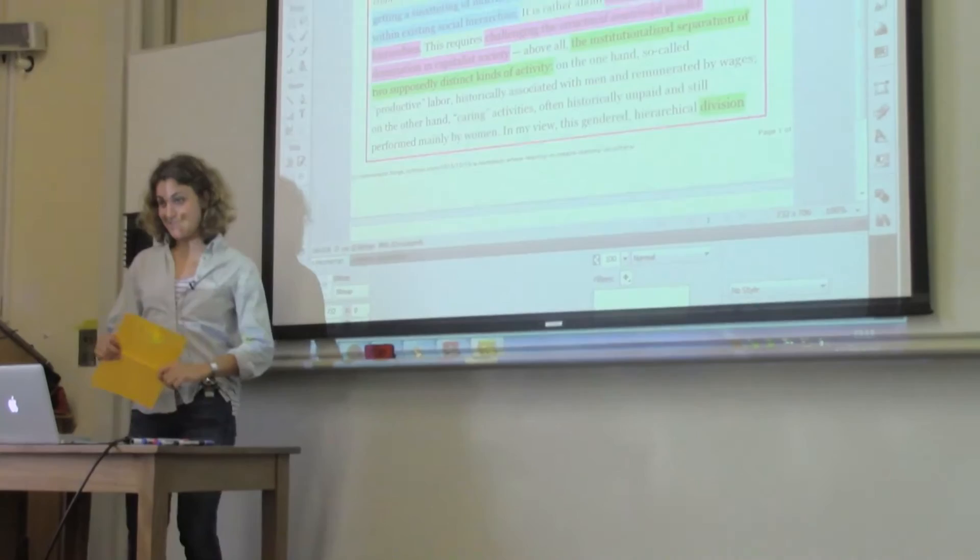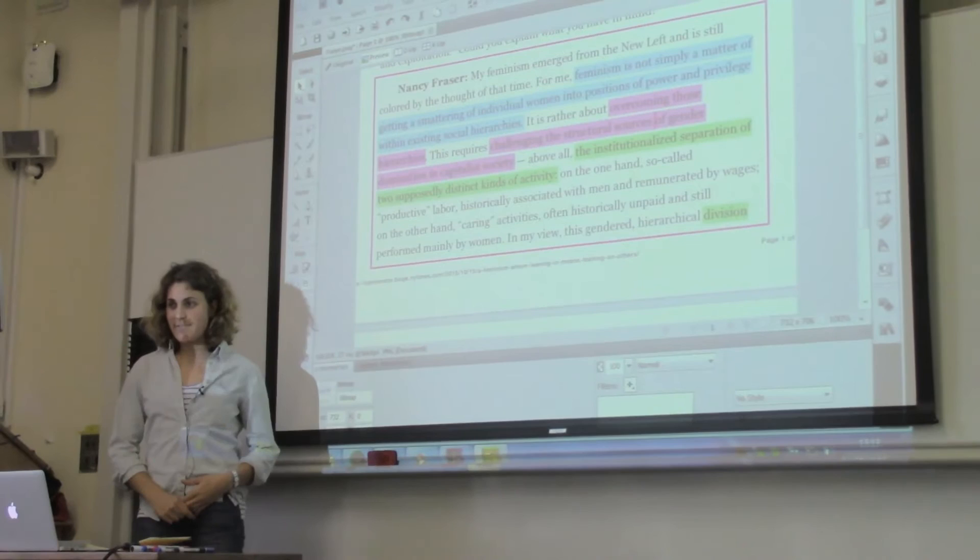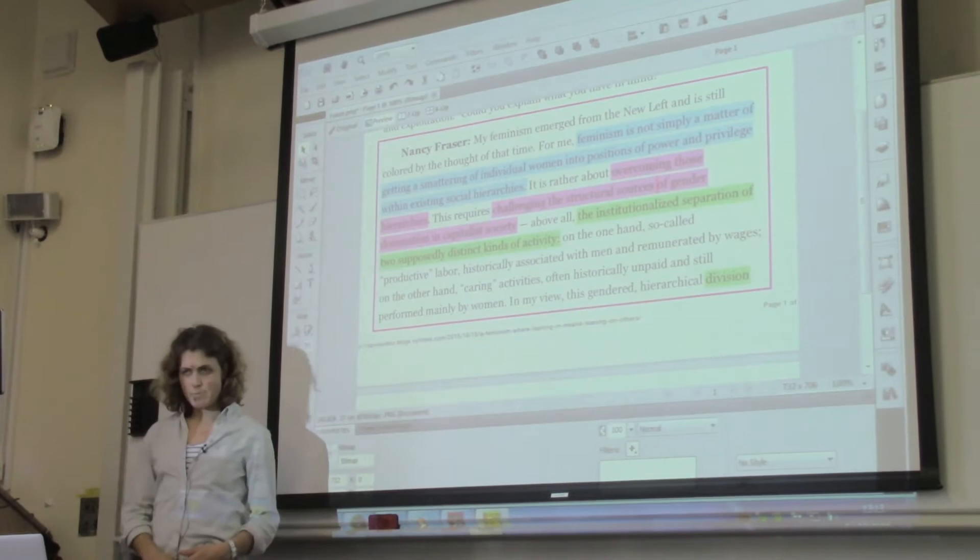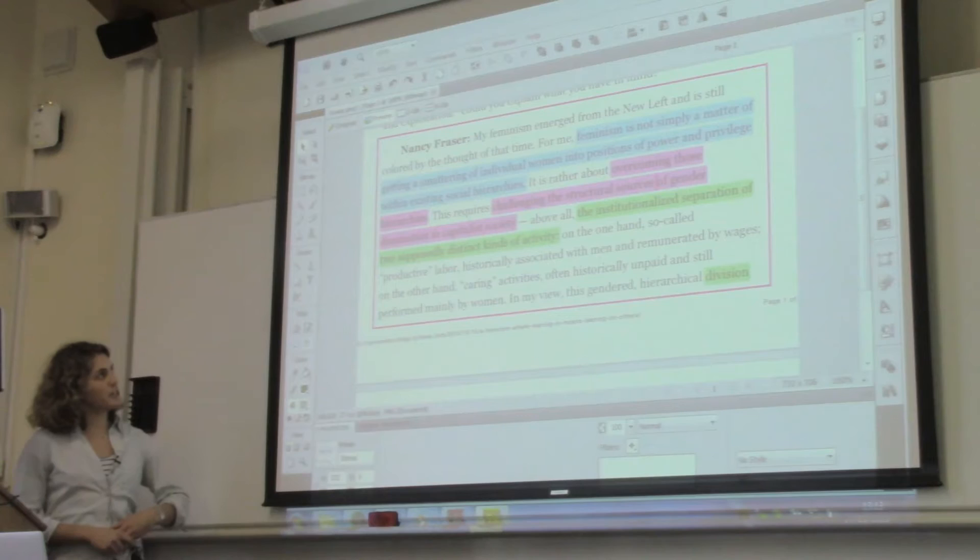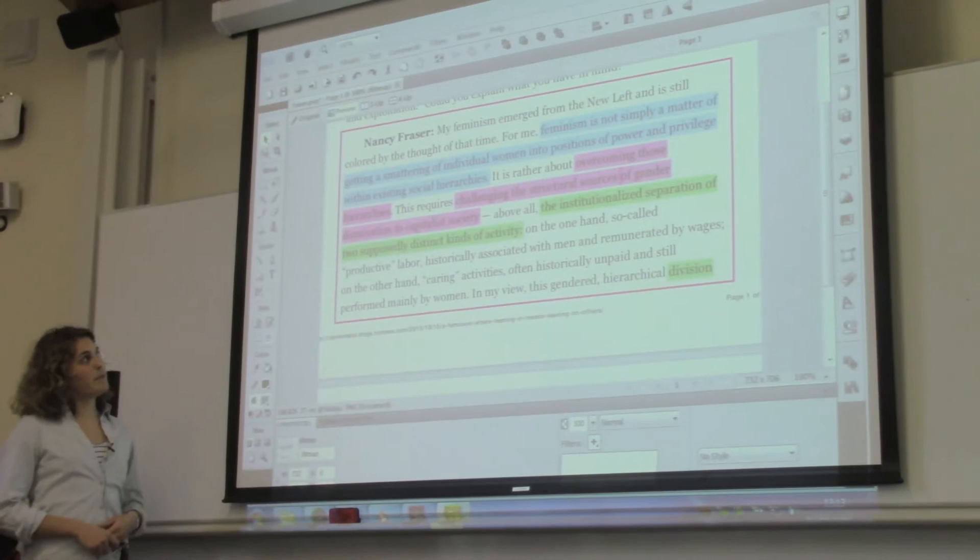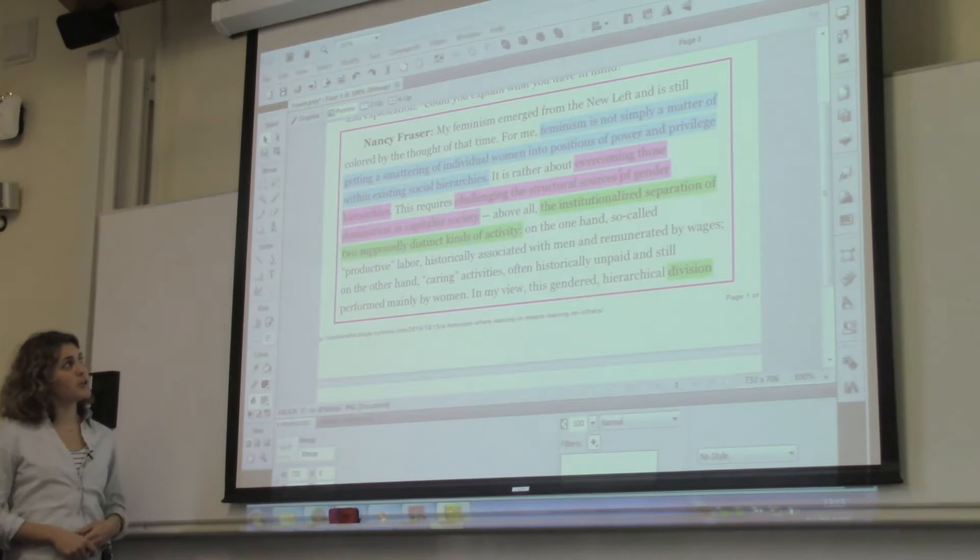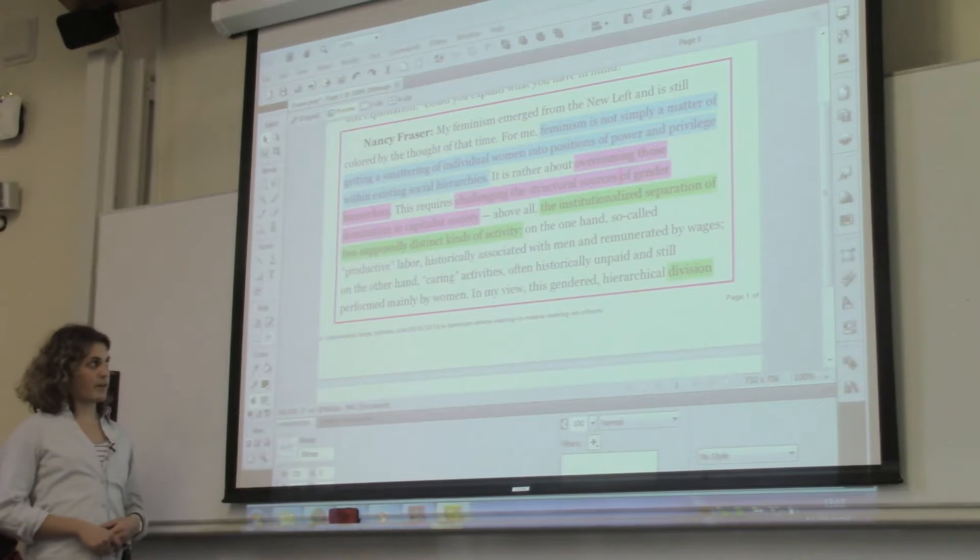Thank you all for coming. So I'll just start off with a passage from an interview with Nancy Fraser, who is one of contemporary critical theories but also Marxist feminists. And Marxist feminism is kind of the form of feminism that I will try to introduce today. And in response to a question, Fraser said that for her, feminism is not simply a matter of getting a smattering of individual women into positions of power and privilege within existing social hierarchies. It is rather about overcoming those hierarchies. And this requires challenging the structural sources of gender domination in capitalist society.